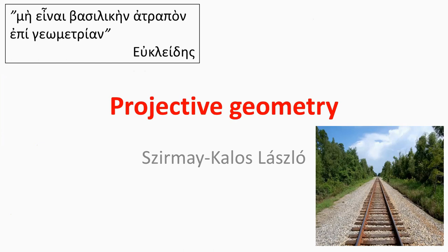In this video we step beyond affine transformations, because affine transformations do not include an important phenomenon called perspective. Perspective can be enjoyed in every moment of our lives — when we look at a railway track, we realize that at the horizon the tracks meet, although we know for sure that the tracks are parallel. Perspective is a transformation that converts parallel lines into intersecting ones.